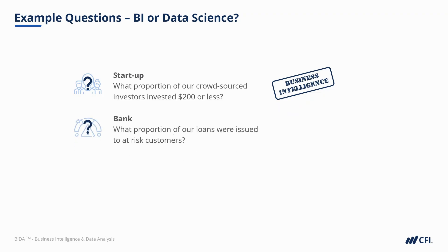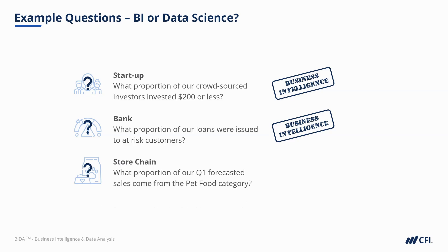A bank may ask: what proportion of our loans were issued to at-risk customers? Again, the question is backward-looking — it describes the loans we issued and can be calculated using math. This belongs in business intelligence. A retail store may ask: what proportion of our Q1 forecasted sales come from the pet food category? While it involves forecasts, we already have those Q1 forecasted sales, so all we're doing is describing what proportion comes from pet food — descriptive, and therefore business intelligence. All of these examples show that BI typically describes existing data.